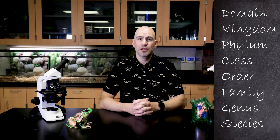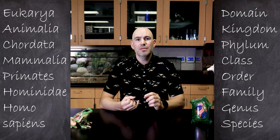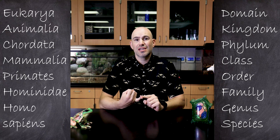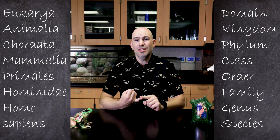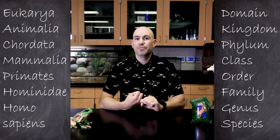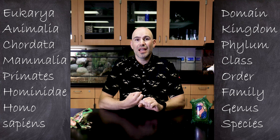I'm human. I am in the domain Eukarya. Eukarya means that my cells have a nucleus. Within Eukarya, I am in the kingdom Animalia because I am an animal. I am an animal because I'm a heterotroph — I eat other things.